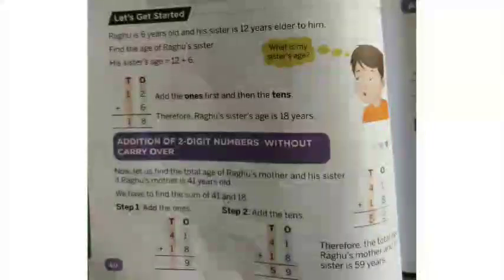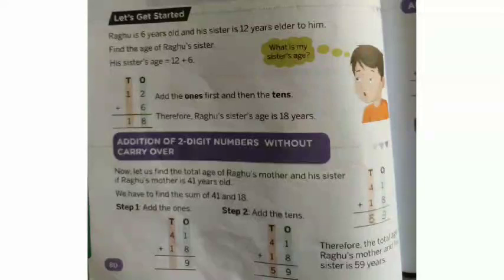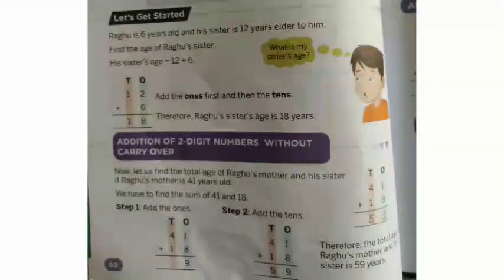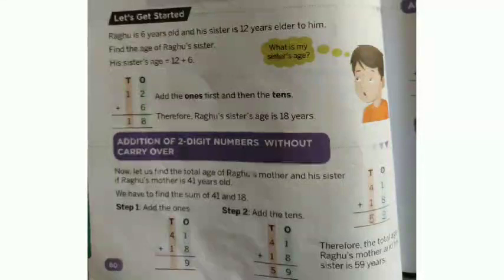Now addition of two-digit numbers. Let's find the total age of Raghu's mother and his sister. Mother is forty-one years old. Now we will solve two-digit addition. Just like we counted boxes on fingers for one-digit, we have to use the same process. Start from the back first. We'll start with the back number, then solve the front number.